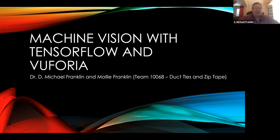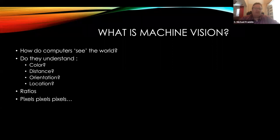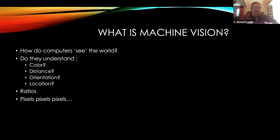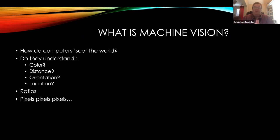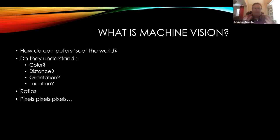When we talk about machine vision, we're talking about how a computer perceives the world. What is machine vision? How do machines see the world, how do they envision it? It seems very trivial for us, and this is one of the biggest problems you'll run into with machine vision or computer vision — the disconnect between how our human eyes work, or at least how we think they work, and how a computer sees the world.